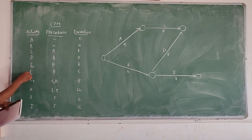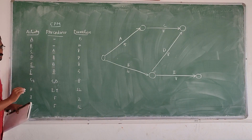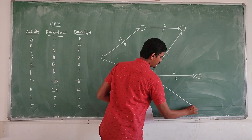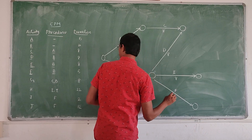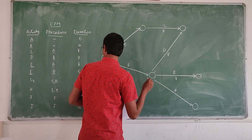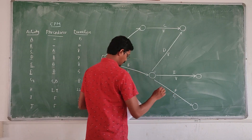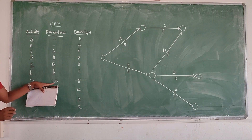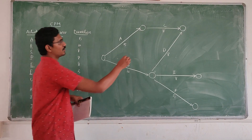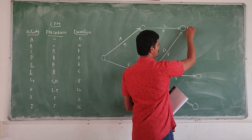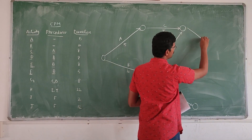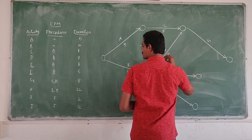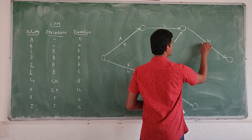Next, F activity — the precedence is also B. Now we can draw the F activity, and the duration is 5. Next is G activity. The precedence is C and D. Now we can draw G. G activity duration is 8.